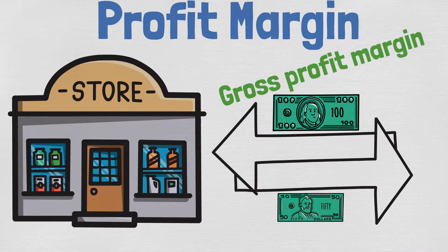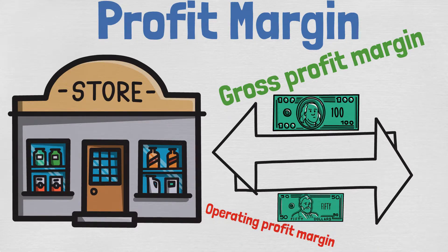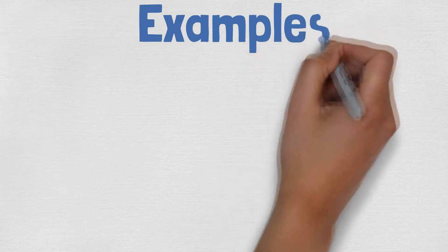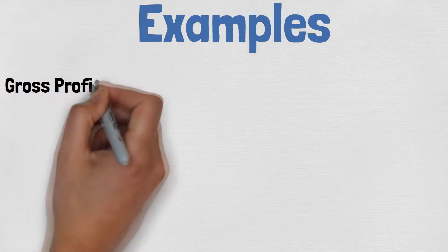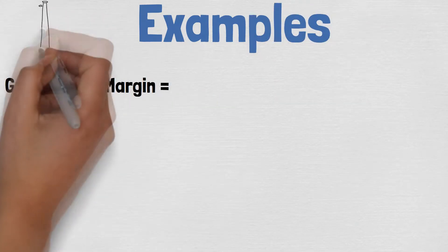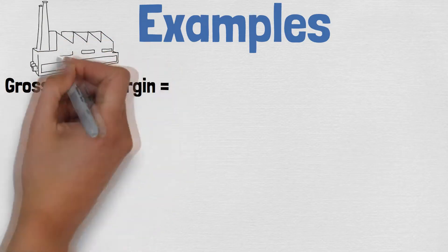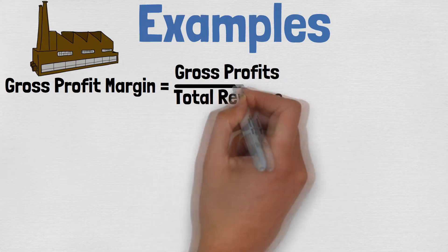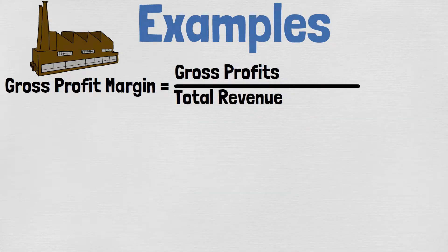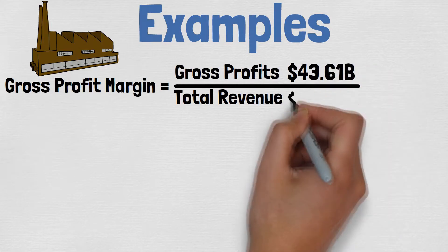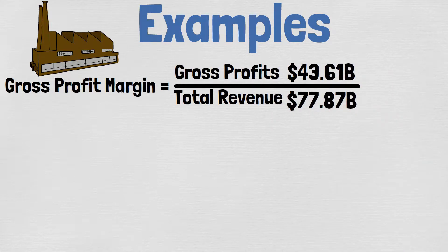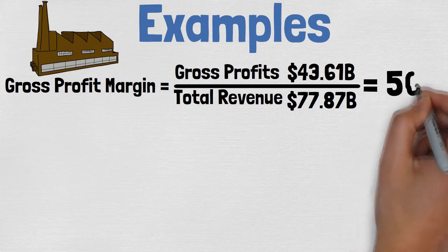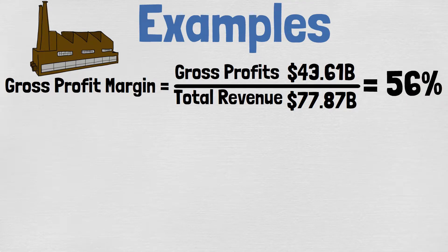You can use the last full year's values or the trailing 12 months. In this case I am going to use the 2020 values. To calculate the gross profit margin, we have to subtract the costs that are directly related to creating the product or service from the net sales, and divide the answer by the total revenue. This basically means dividing the gross profits by the total revenue. For Intel, the total revenue of 2020 was $77.87 billion and the gross profit was $43.61 billion, giving a gross profit margin of 56%.